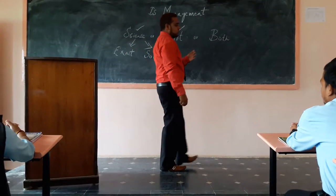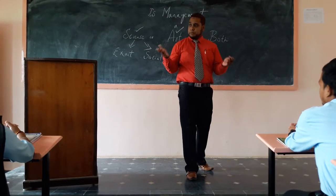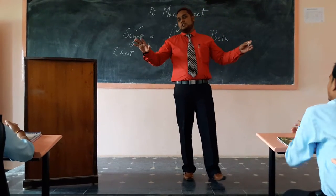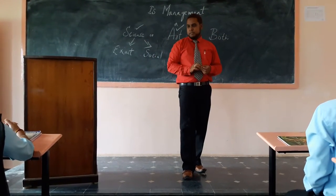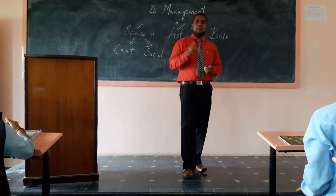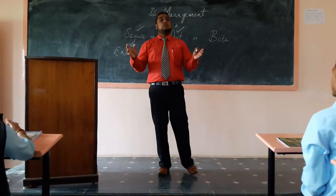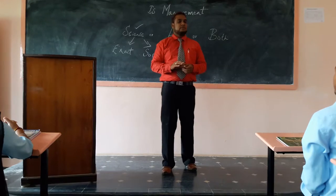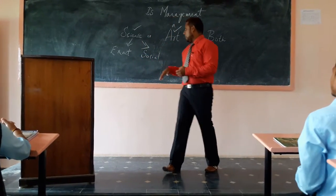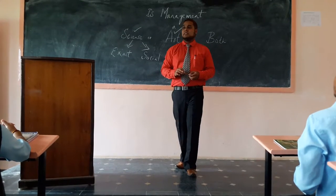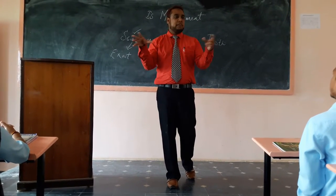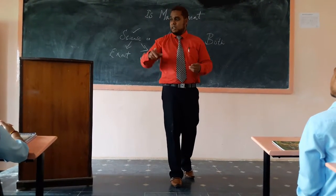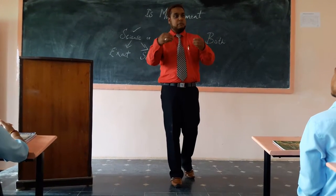Now we will move on to justify whether management is an art or science or both. Even the most difficult topics on earth can be best understood with proper examples. Example number one: how does a doctor manage to perform a surgery or an operation? He uses both science as well as art. The science for the doctor is the equipment, medicine, scissors, etc. And the art is how he performs the surgery — how much he has to cut open, how much he has to stitch back, etc.